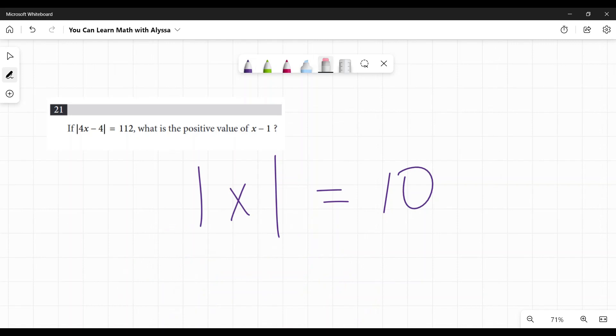So when you're solving an absolute value equation, you have to take into account both of those options. So 4x minus 4 could equal 112 or 4x minus 4 could equal negative 112.